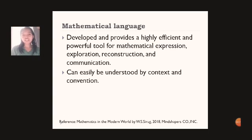Mathematical language can easily be understood by context and convention. When we say context, we are working on the particular topic being studied, that's the context, while convention is where mathematicians and scientists have decided that this particular symbol will have particular meaning.